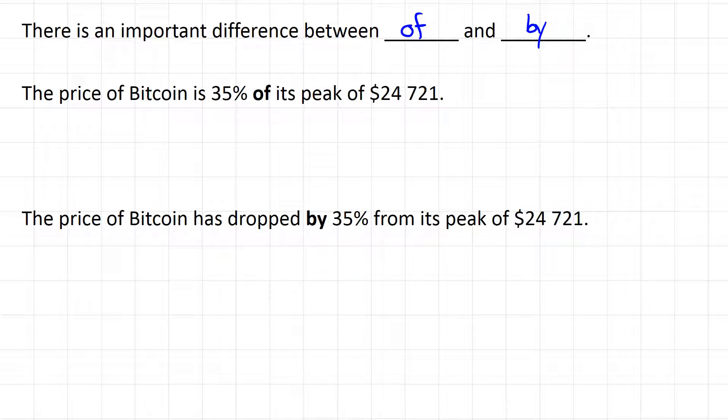The price of Bitcoin is 35% of its peak $24,000 value. So we could calculate 35% of, that would be 0.35, 35% as a decimal, times 24,721. That gives us a total of 8,652.35 or $8,652.35.